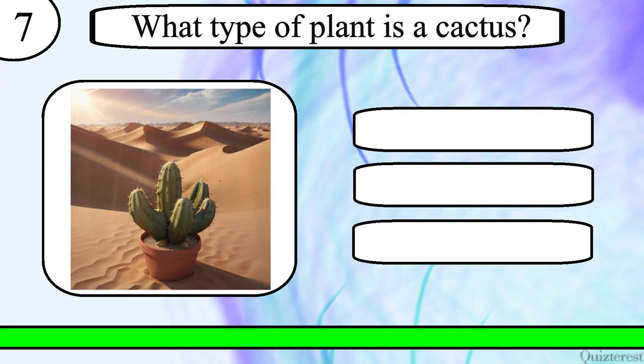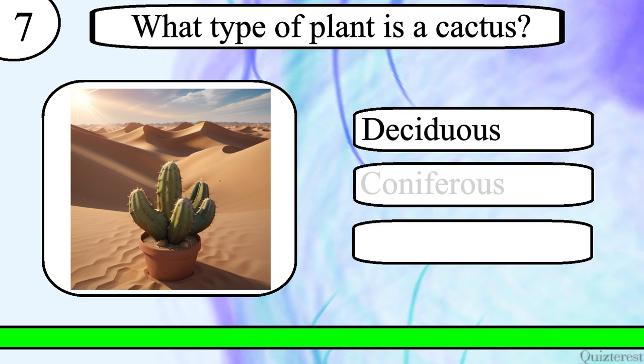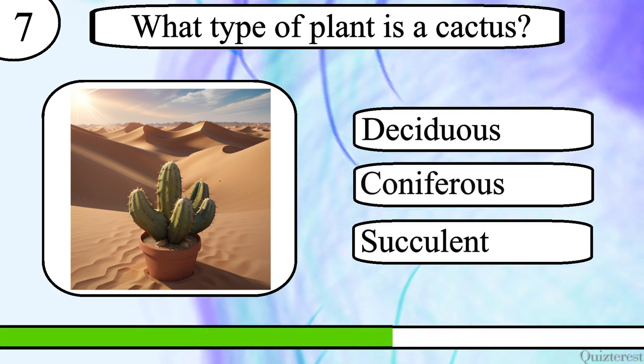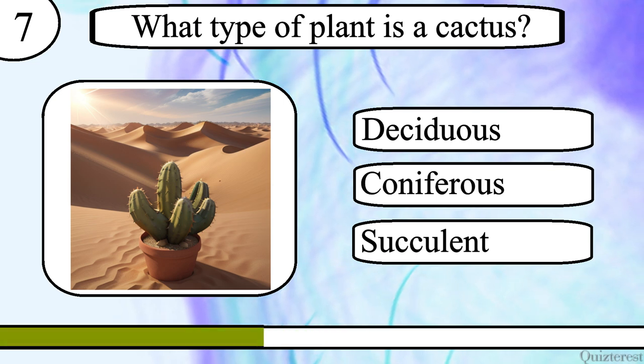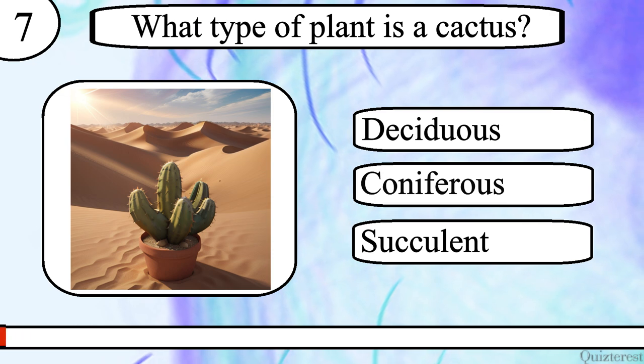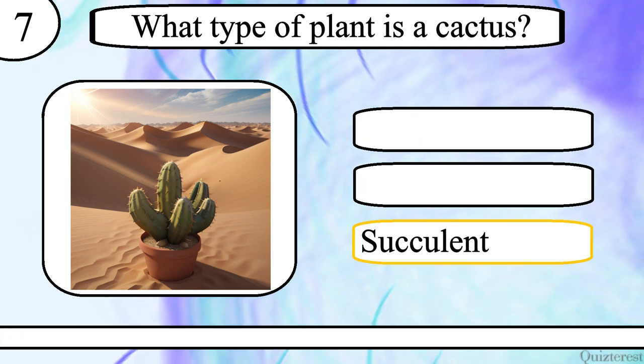Question 7. What type of plant is a cactus? Deciduous, coniferous or succulent? The correct answer is succulent.